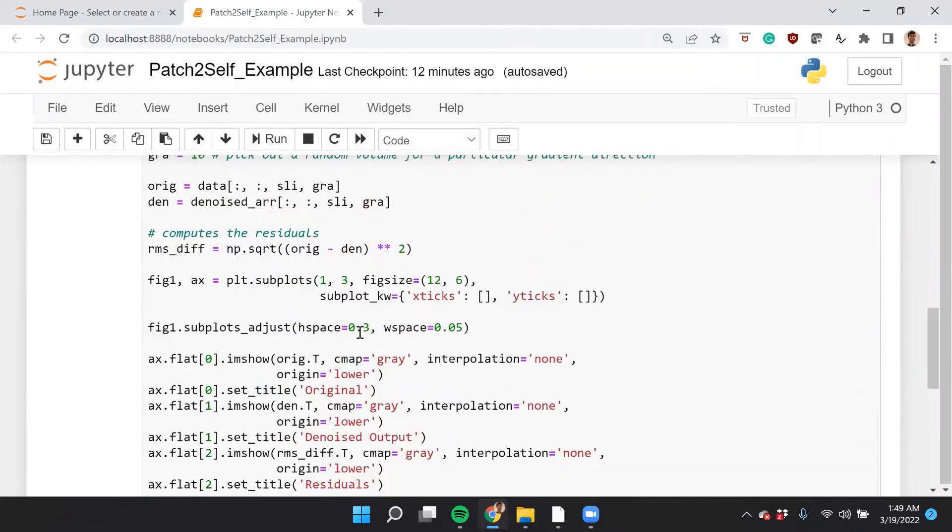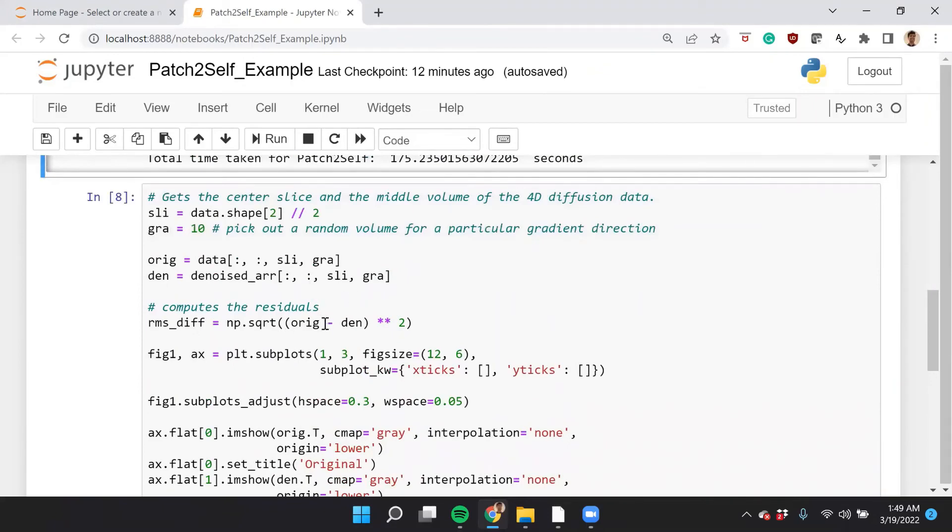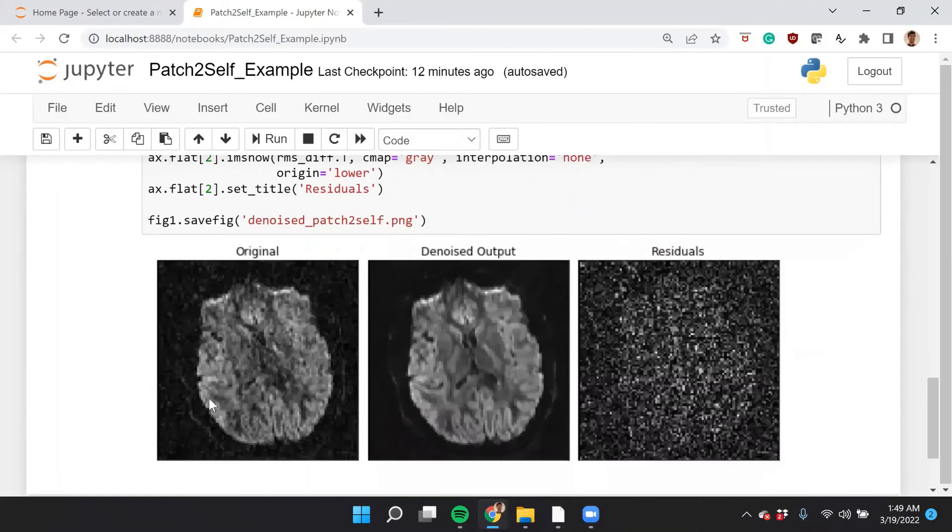And next we show the output. So for example, you can use in the DIPY tutorial, we have this example of how to see the denoising performance. And this is your raw image. This is your denoised output. And you can see the residuals over here. As you can see, the residuals do not have any signal components in them and does not really suppress signal. It's just basically noise.